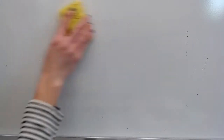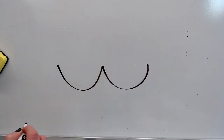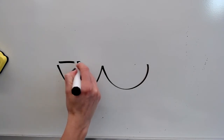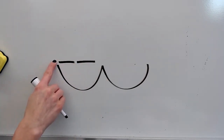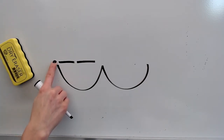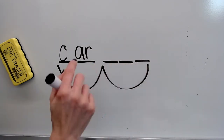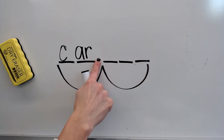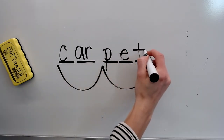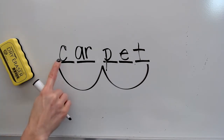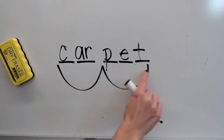Nice work. If you got that one correct, give your brain a kiss. How about let's follow that with our other challenge word — carpet. What word? Carpet. Two parts in carpet: car-pet. Stretch the sound in car: c-ar. Write your sound spellings for car. Stretch the sound in pet: P-E-T. Write your sound spellings for pet. Check your word. Spell carpet: C-A-R-P-E-T. Word — carpet. Yes, carpet.